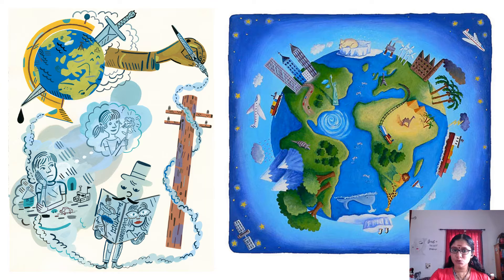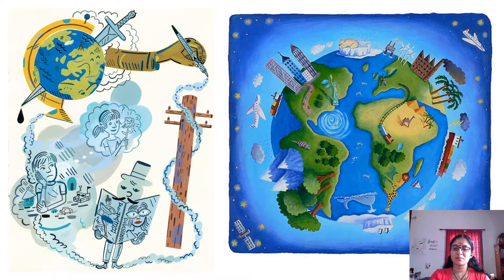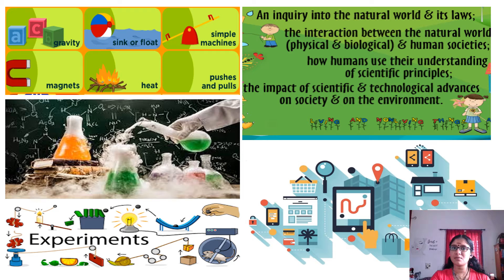When those two pictures were shown, you had a doubt whether it was 'How the World Works' or 'Where We Are in Place in Time,' because that includes the continents and everything. By looking at the first picture you thought it was 'How the World Works,' but the second picture gave you the idea it could be 'Where We Are in Place in Time.' Then I showed you another part that had words related to the theme like gravity, sink or float, and simple machines that you already learnt in grade two.